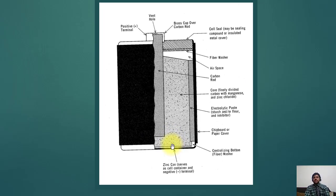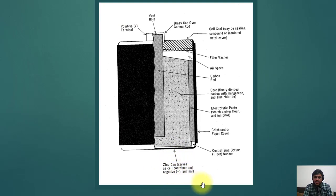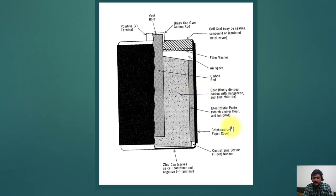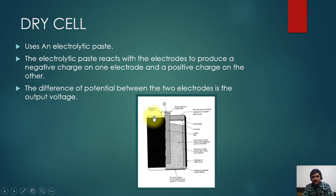The difference in potential between the two electrodes is the output voltage. Looking at the dry battery construction: the positive terminal is at the top, the negative terminal at the bottom. The outer casing is a zinc can. There is a fiber washer, and the main terminal is a carbon rod. The core contains finely divided carbon with manganese and zinc chloride, which reacts with the carbon rod to produce voltage. The electrolyte paste contains starch and an inhibitor. This is the basic structure of a dry cell.